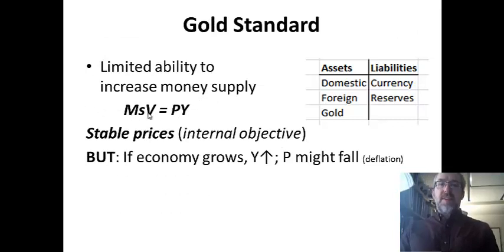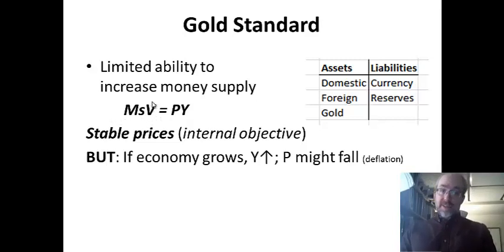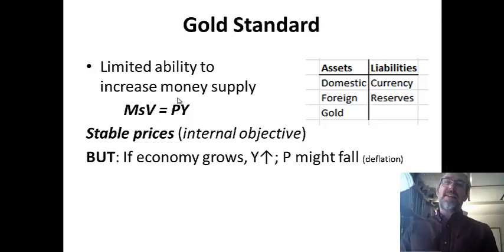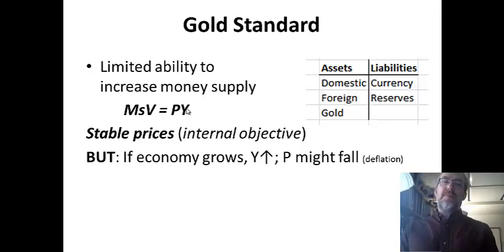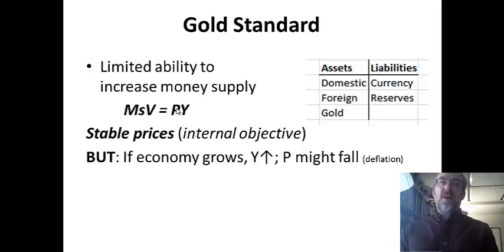The equation I'm referring to is the quantity theory, or equation of exchange — there are different names for it. Money supply times the velocity of money — the number of times each dollar or unit of currency is spent — equals the price level times output. This is actually nominal GDP broken into price level times real GDP. Sometimes you can boost the money supply to boost output and GDP, sometimes it's a mix of inflation and output growth, but a lot of times people say that increasing the money supply only leads to inflation.